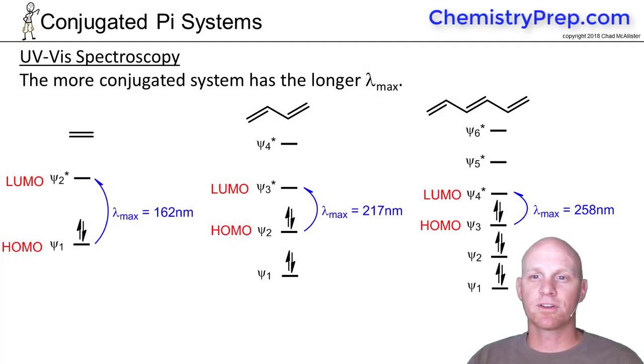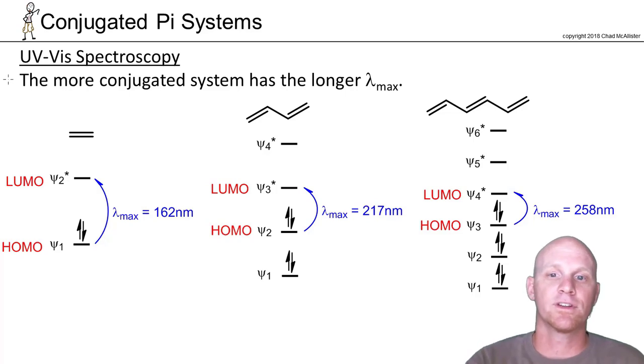Now that we've talked about conjugated systems, I want to spend just the briefest of time talking about UV-Vis spectroscopy. So ultraviolet-visible spectroscopy, and the big crux of it is right here.